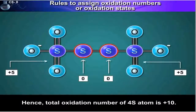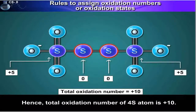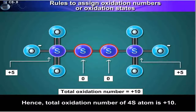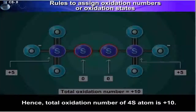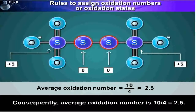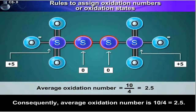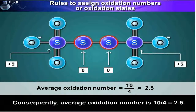Hence, the total oxidation number of the 4 sulphur atoms is +10. Consequently, the average oxidation number is 10 upon 4, which is equal to 2.5.